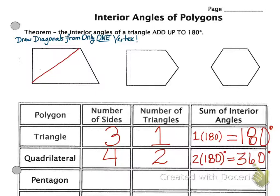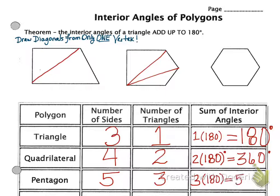How about a pentagon? A pentagon has five sides. If we draw our diagonals from one spot in there, then we have three triangles. And three times 180 is 540 degrees total in all of the angles when we add them all up.